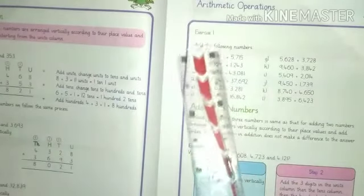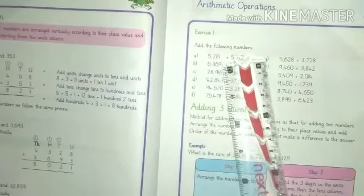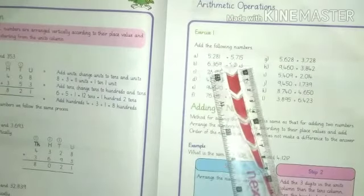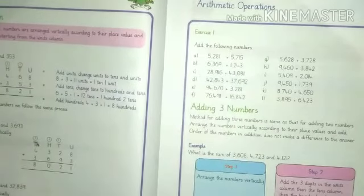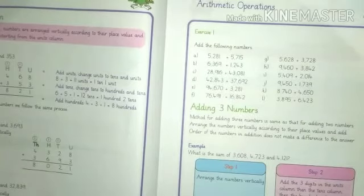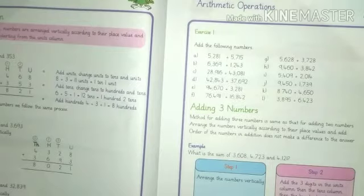So exercise number 1 is add the following numbers. We will add these numbers. These numbers are written horizontally. Firstly we will arrange these numbers vertically and then we will add. हम इन numbers को पहले vertically arrange करेंगे, उसके बाद इनहें जमा करेंगे. So let's start.